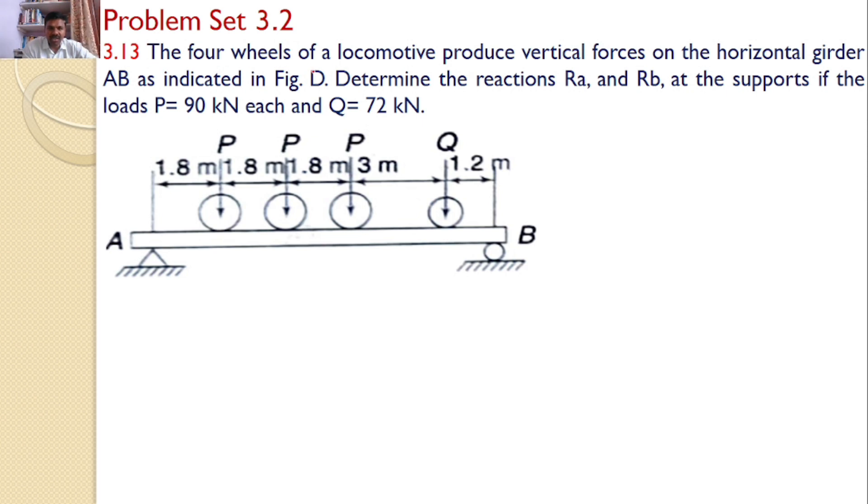The four wheels of a locomotive produce vertical forces on the horizontal girder AB, as indicated in figure D. Determine the reactions Ra and Rb at the supports if the loads P equals 90 kN and Q equals 72 kN.